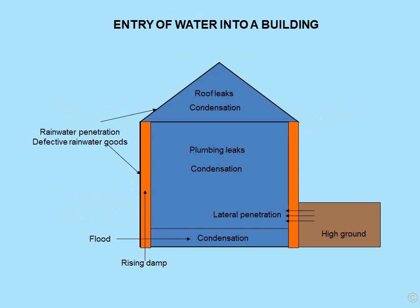How does water get into a house and where? Very common: roof leaks, condensation, plumbing leaks, condensation in the main part of the property, lateral water penetration, high ground levels, flooding, subfloor condensation, rising damp, defective rainwater goods, and rainwater penetration from the outer fabric of the building.